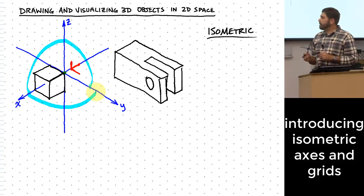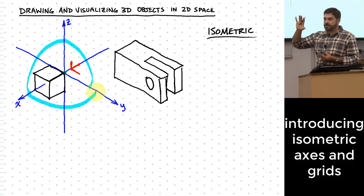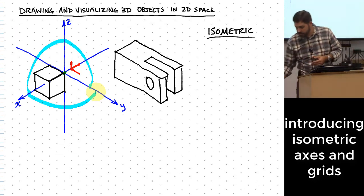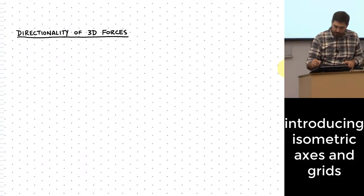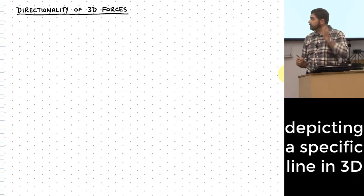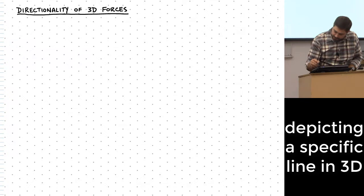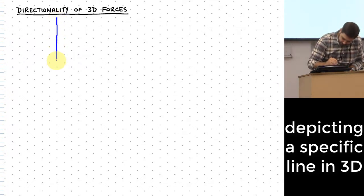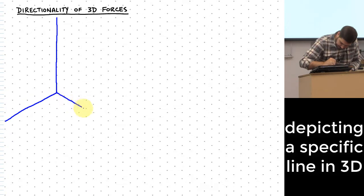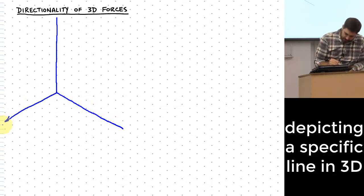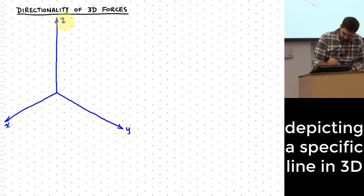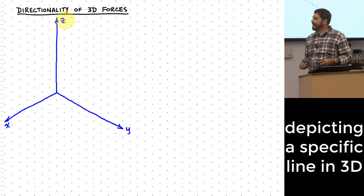That's some background so you understand this idea of being able to draw things in isometric space. Let's apply that now to some force vectors as well as other things we could measure in this set of axes. Let me start again with a set of axes, and I'm going to label these X over here, Y over here, and Z up here.